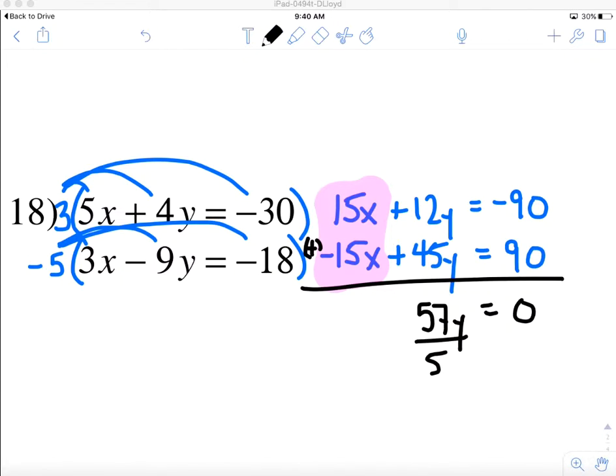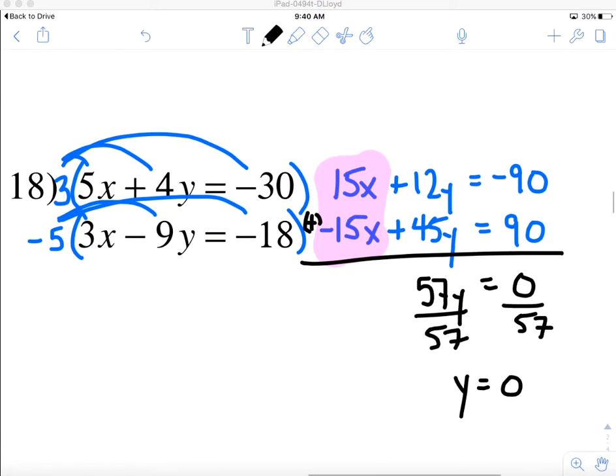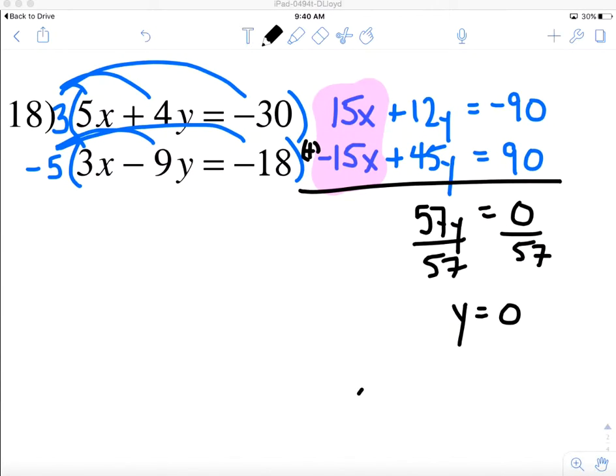I'm going to divide by 57, although you probably already know that 57 times 0 equals 0, so y is 0 and there's half my answer. Slide this up a little bit. This is where y always comes second, so I know that my y value is 0.